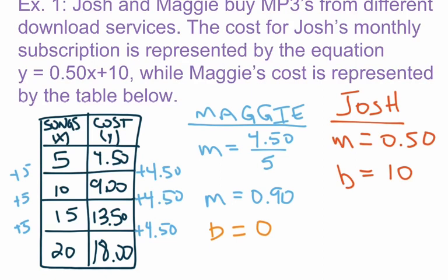Maggie's y-intercept is 0, meaning her song subscription is 90 cents per song but she does not have to pay any sort of monthly fee. Josh, on the other hand, pays $10 per month plus 50 cents per song downloaded.